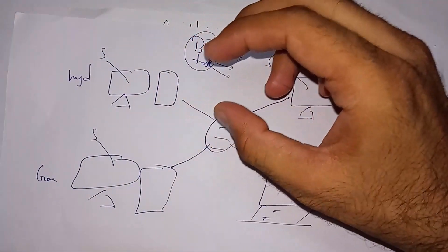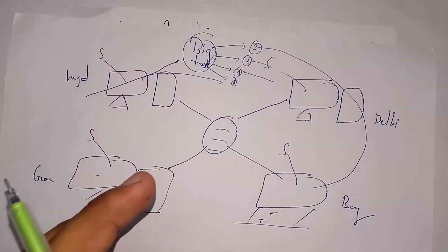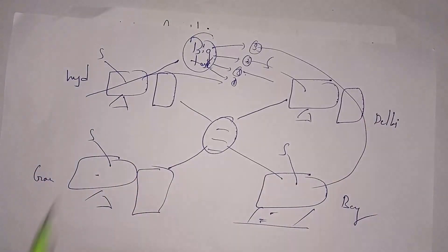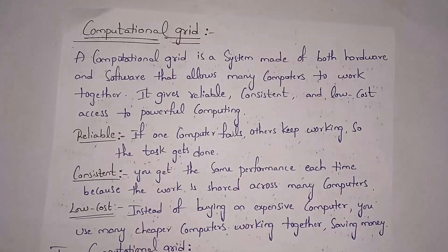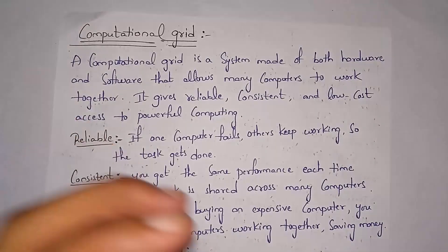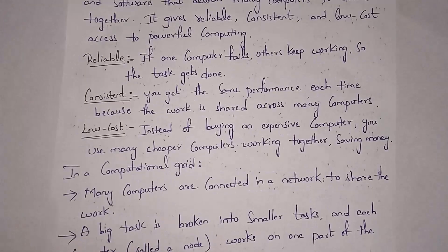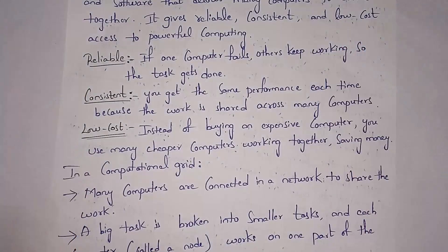Whenever a big task is given, it is divided into smaller subtasks shared among multiple computers using this common software. Even if one system fails, the remaining systems will continue to work. The advantages of computational grid are: reliability — remaining computers work even if one fails; consistency — shared workload means good performance; and low cost — instead of one expensive machine, you can purchase smaller cheaper computers and connect them.